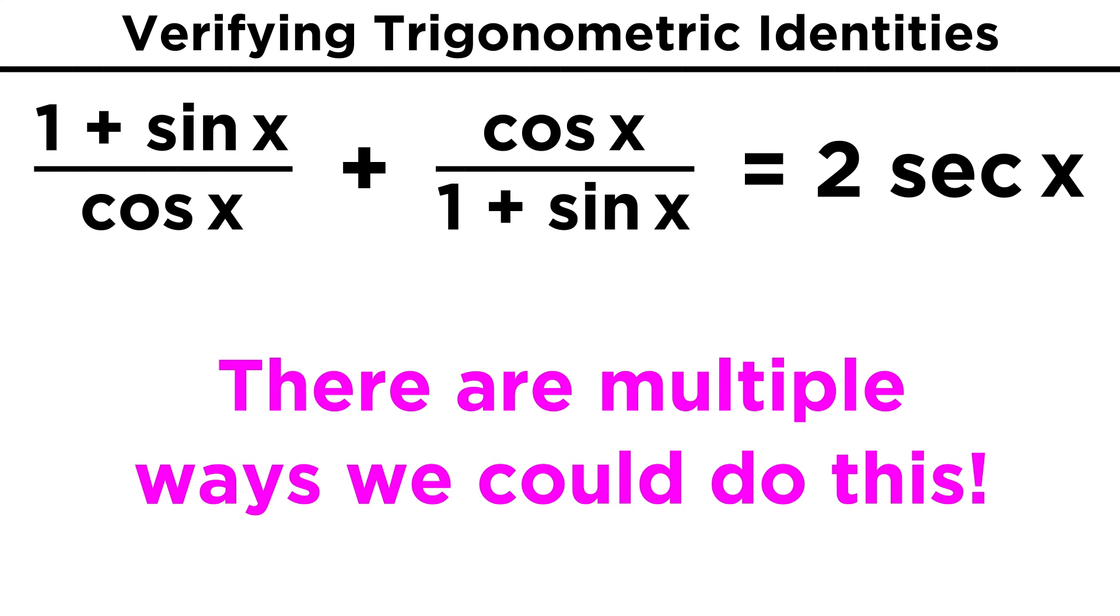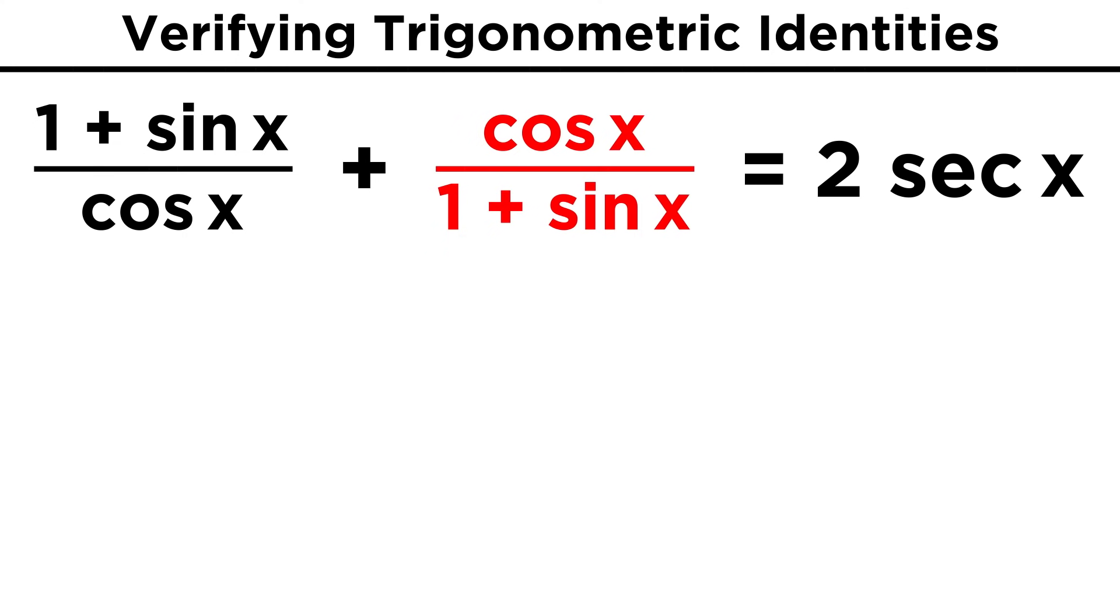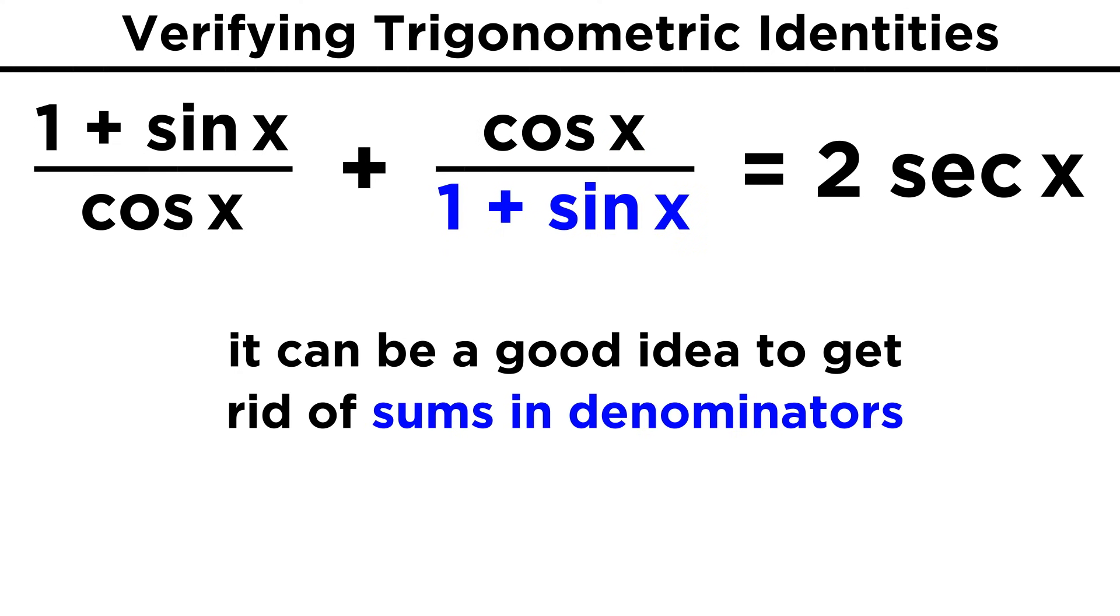Here's one where there's a few different ways to go. One strategy that may jump out would be to combine these fractions by getting a common denominator. That is a totally valid way to go, but I can think of a way that's a little quicker. Take this second fraction. Whenever we have sums or differences in denominators, it's sometimes a good idea to try to get rid of those.